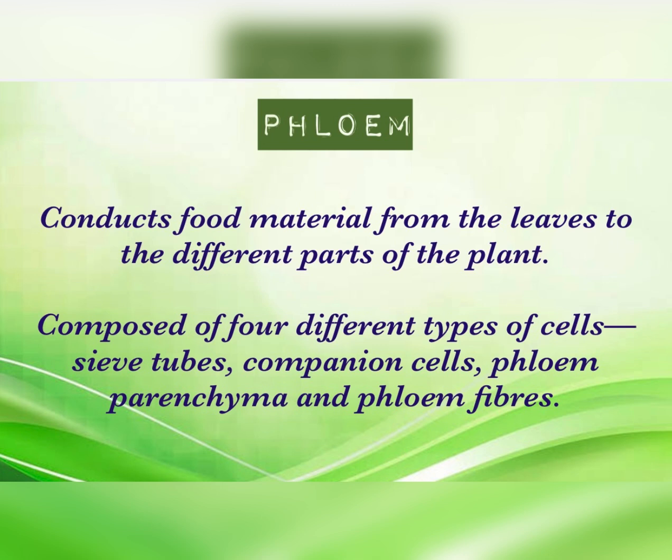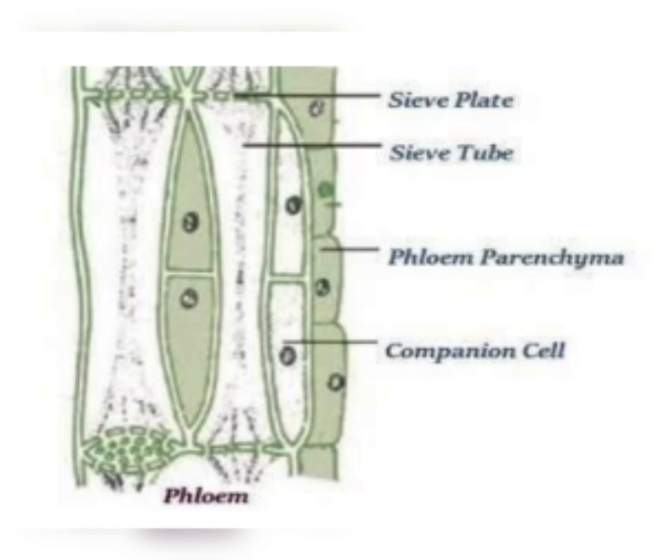Companion cells help the sieve tube during conduction. Phloem parenchyma and phloem fibers provide strength. This is the diagram of phloem in which all the cells are shown. Thank you.